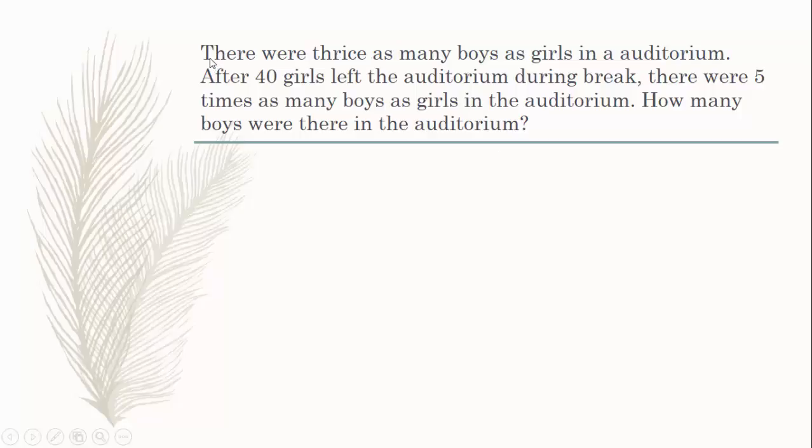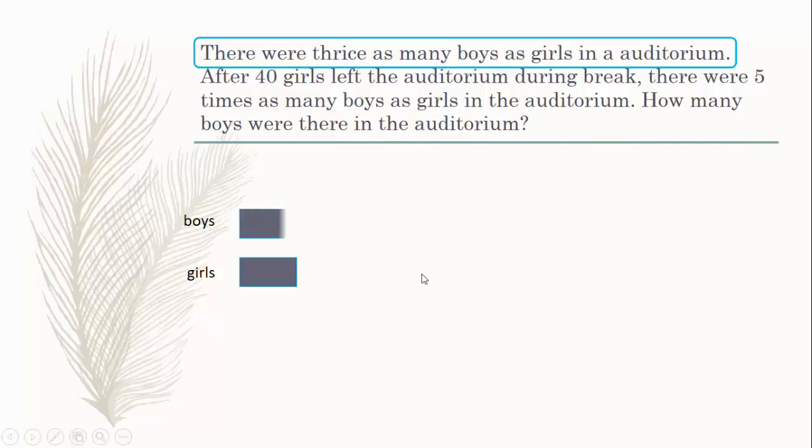First, let's take the first statement. There were thrice as many boys as girls in an auditorium. We see that what comes after 'as many as' is girls, so that's our reference. One unit for the girls, and there were thrice as many boys, so three times as many boys. For boys, we'll have three units here.